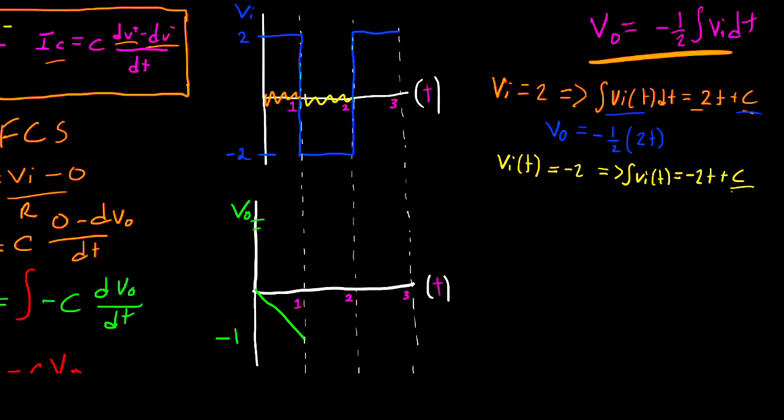Now in this case, the constant C is going to be important because we have this first interval here that's going to give us an initial condition. But the good news for us, we don't have to calculate the actual y-intercept. We can focus on the slope and pick up where our last graph left off. So we can say that VO is equal to negative 1 over 2 multiplied by negative 2T plus C. We can distribute the negative 1 half and we'll have that VO is equal to 1T minus 1 half C.